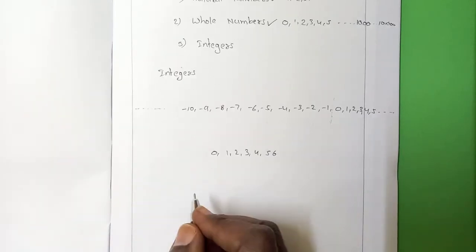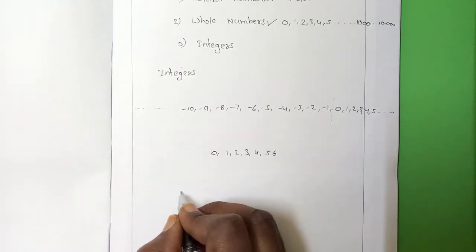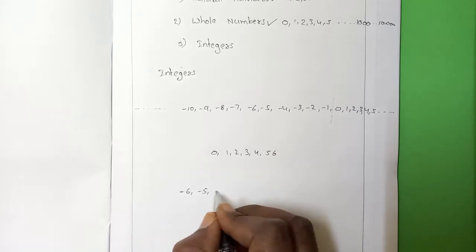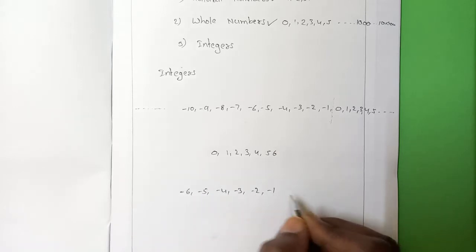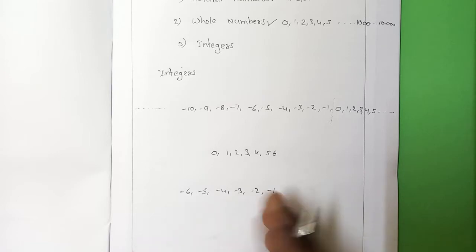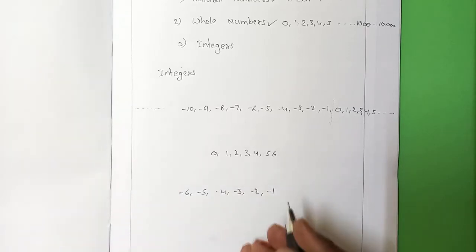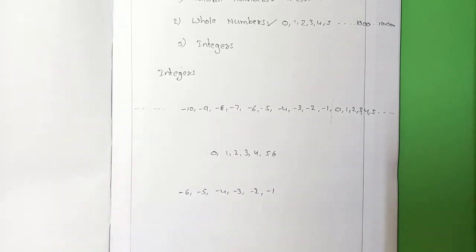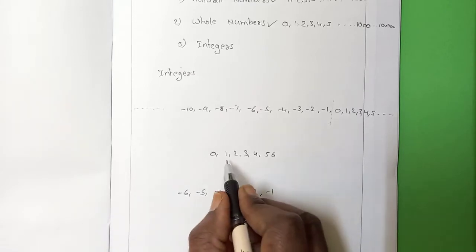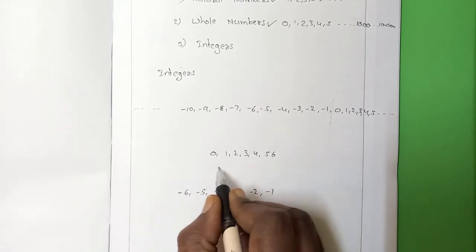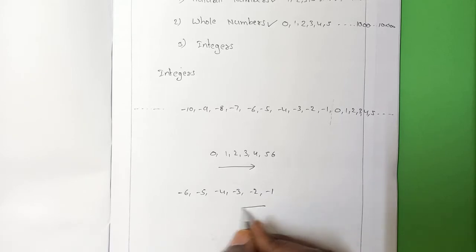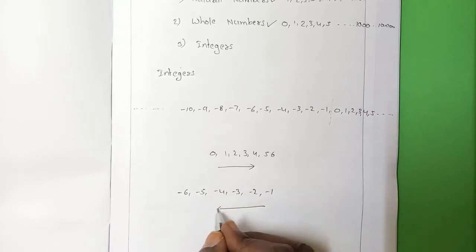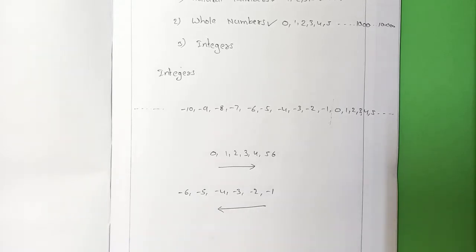But when it comes to integers, how are we writing? We are writing minus 6, minus 5, minus 4, minus 3, minus 2, minus 1. Why are we writing from right to left? For positive numbers we go left to right, but for negative numbers the numbers are going in the left direction.